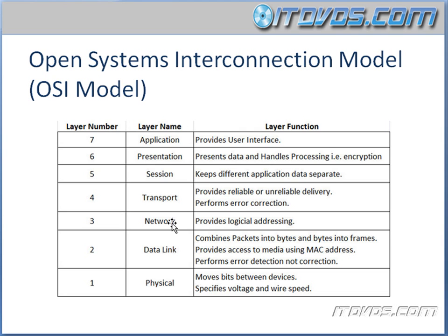Layer three is your network layer, and this provides logical addressing. In an IP network, a logical address is an IP address. The reason it's called logical is because a physical network adapter can have different IP addresses — it can have multiple IP addresses — so that makes it logical.